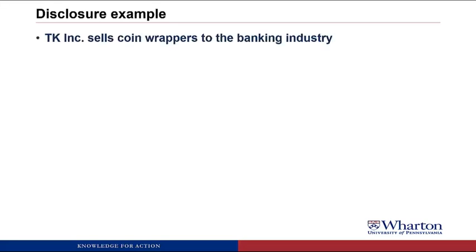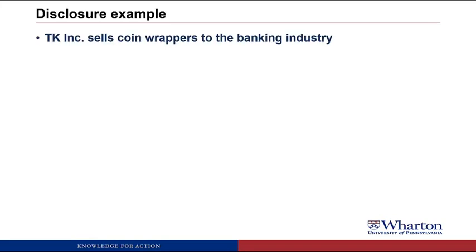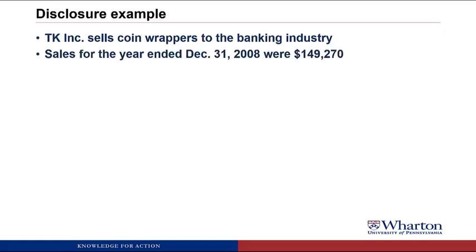For our disclosure example, we're going to look at TK Incorporated, which sells coin wrappers to the banking industry. This is a disguised company — what I decided to do for all of these videos is take real companies' financial statements, but then disguise them by changing the names and making up different businesses, just so I don't get in trouble for inadvertently criticizing some company. Anyway, TK had sales for the year ended December 31, 2008 of $149,270 — and that's in thousands, so that's actually 149 million.